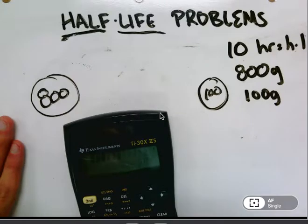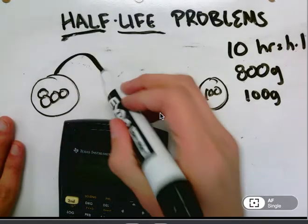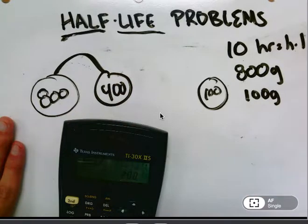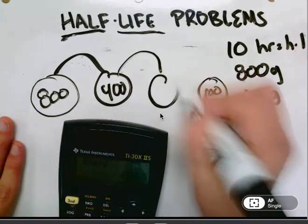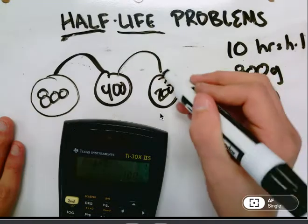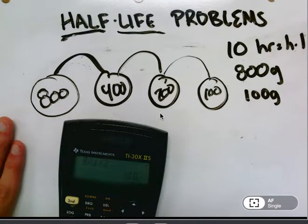800 divided by 2, that's one half-life, I end up with 400. 400 divided by 2, just keep hitting divided by 2, that leaves me with 200. Divided by 2 again. My diagram's complete.